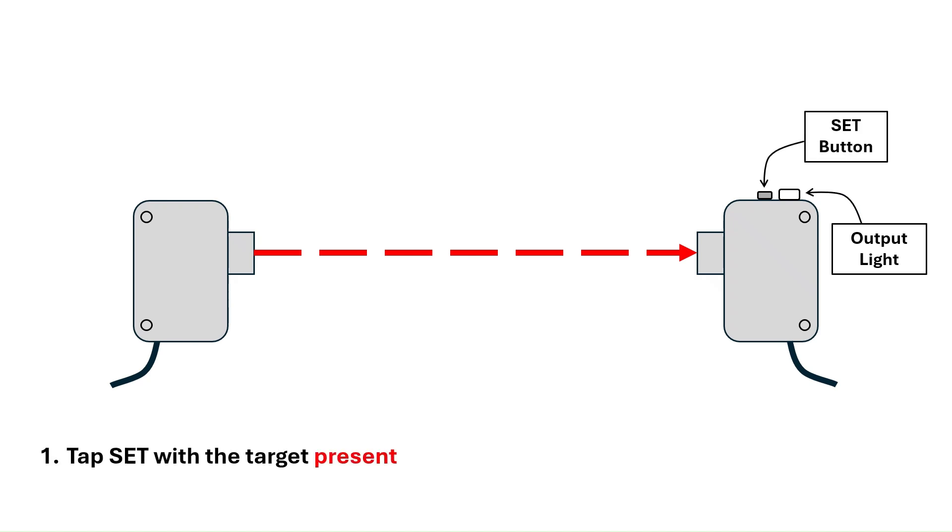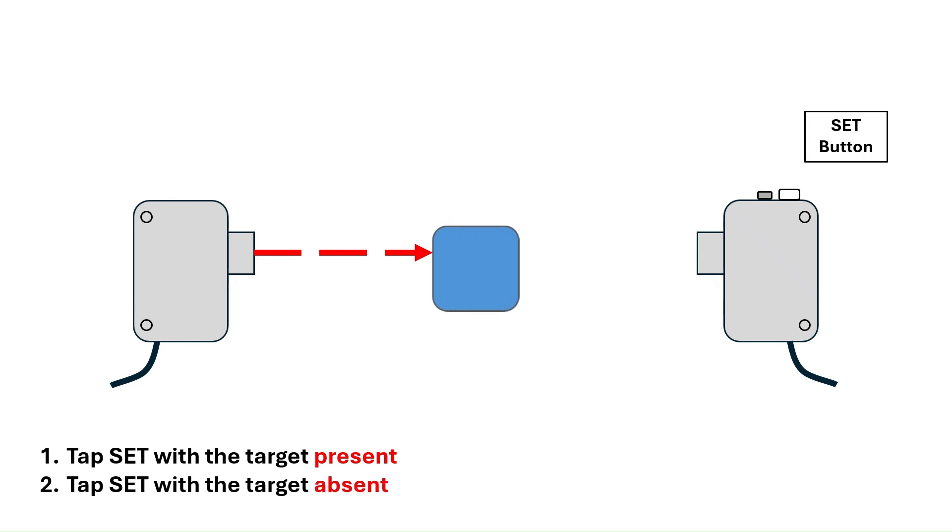To perform a two-point calibration, put the target in front of the sensor and briefly tap the set button. Then, remove the target from the view of the sensor and briefly tap the set button again.